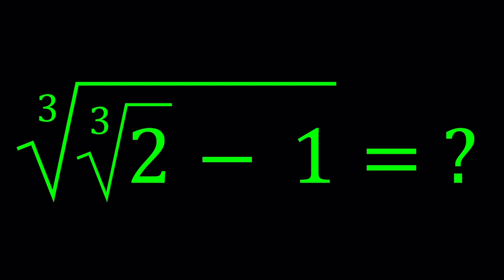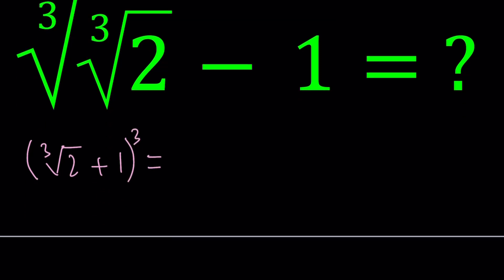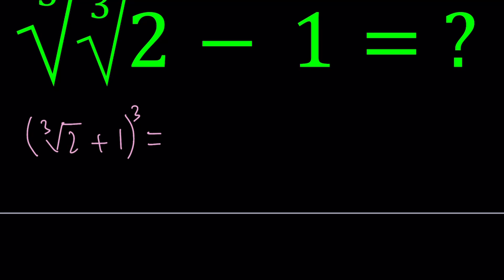To solve this problem we're going to start with something that looks like the inside but with a plus sign — in other words, the conjugate. So I'm going to take the cube root of two plus one and cube it. You might wonder where this comes from, but you're going to see the reasoning behind it. By the way, this problem is from ARML 1997 — American Regions Math League.